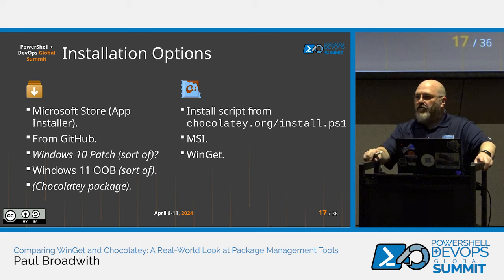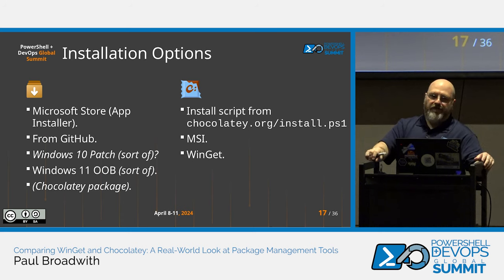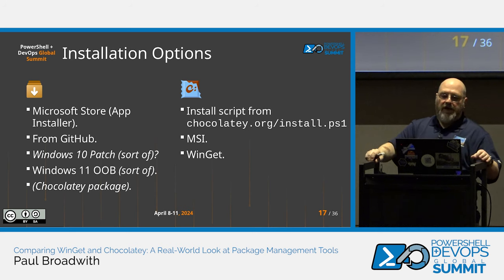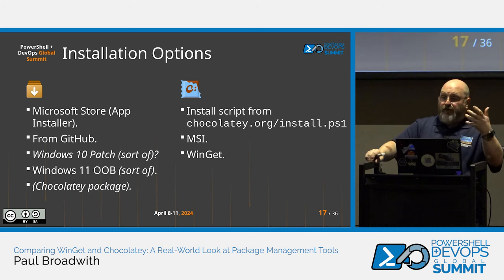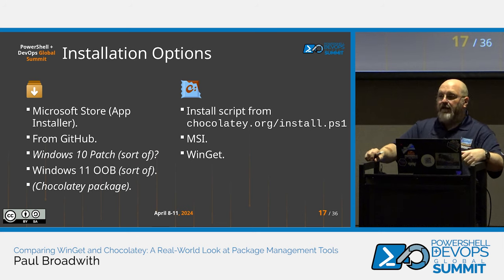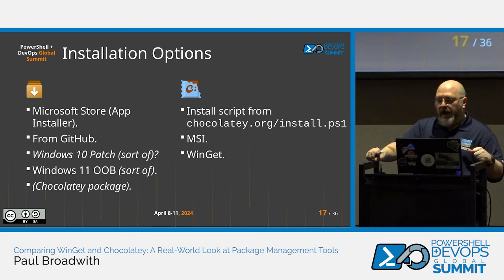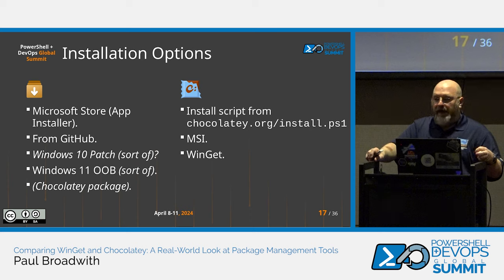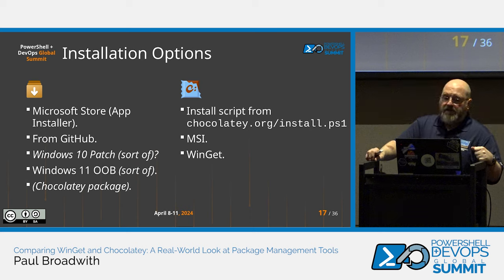The Windows 11 Out-of-Box Experience installs WinGet when you first log in — it takes around 15 minutes. That could be a problem if you're using automation tools like Packer, since WinGet won't be there without logging in. There's also a Chocolatey package for WinGet — 'choco install winget' — which I created and maintain, so that's another installation option.